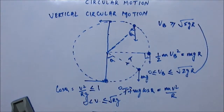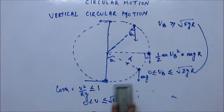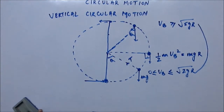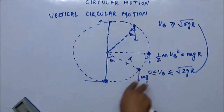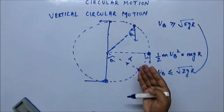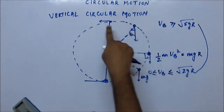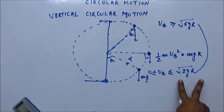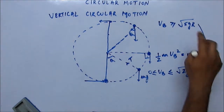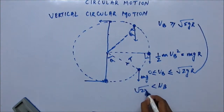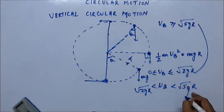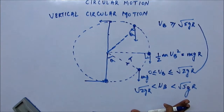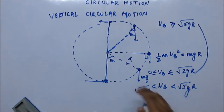The bottom line is: if the velocity at the bottom is greater than 0 but less than √(2gR), the bob will oscillate because it remains in the lower half of the circle. If velocity is greater than √(2gR) but less than √(5gR), the bob enters the upper half but cannot reach the top, so it leaves the circular path. If velocity is greater than √(5gR), it completes the circle.